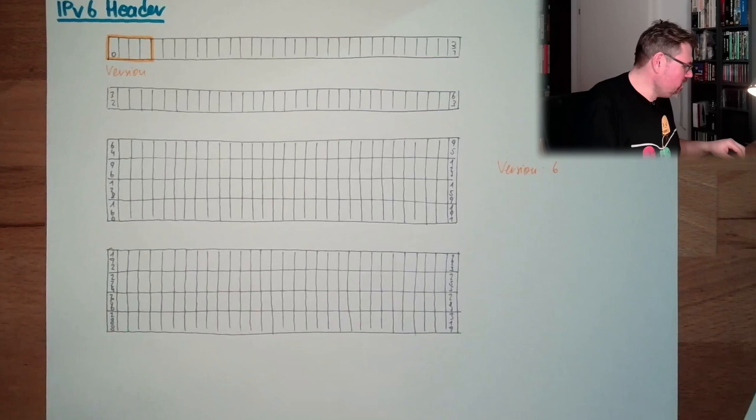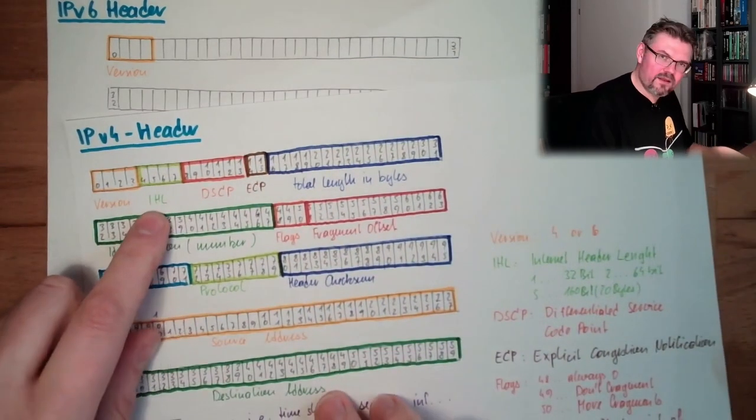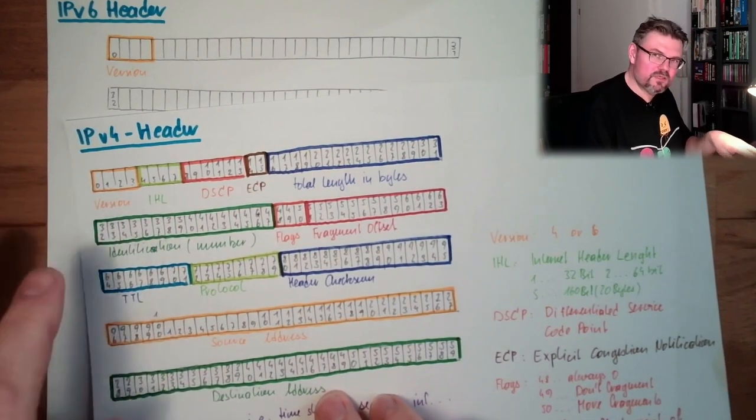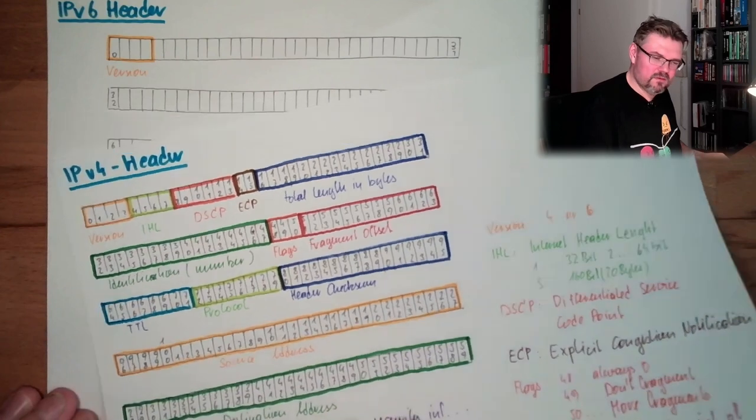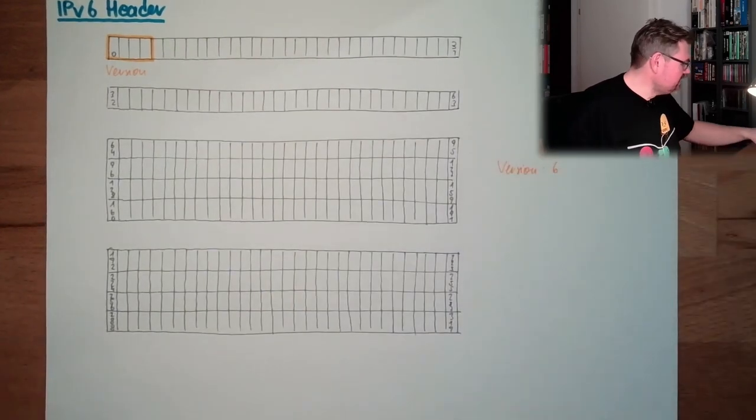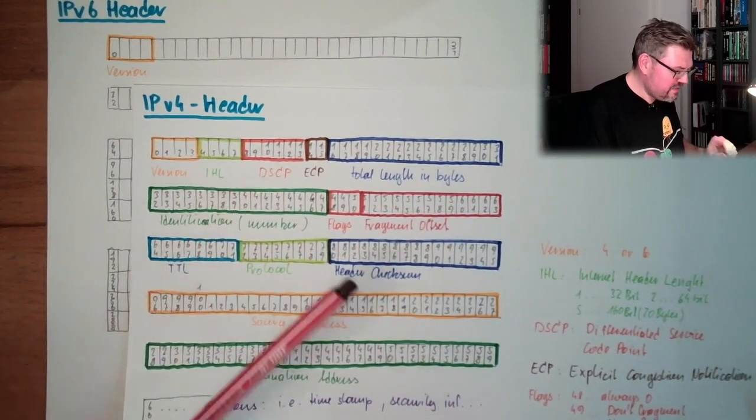We have no Internet Header length because the Internet Header of IP Version 6 is always the same. It's always the same. So, the next part, which is coming, is 5 bits of this DSCP.